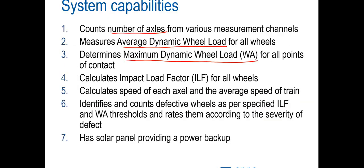WILD can count the total number of axles, measure the average dynamic wheel load for each axle, and determine the maximum dynamic wheel load. It calculates an impact load factor — the ratio of maximum to average dynamic wheel load. If this factor exceeds a threshold, an alarm is triggered; beyond a higher threshold, a severe alarm requires the coach to be detached and examined. Using the entry and exit sensors, the system also calculates the speed of each axle and the average train speed. Continuous axle counting allows identification of the exact position of the defective wheel, which is reported to the TXR control room for action.